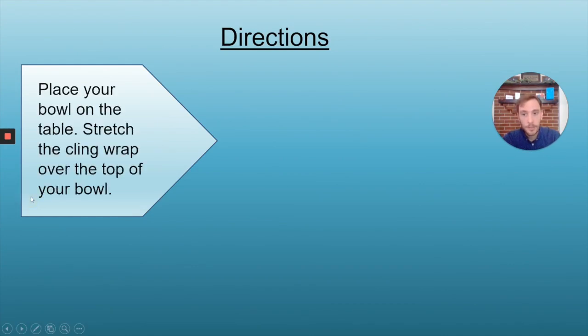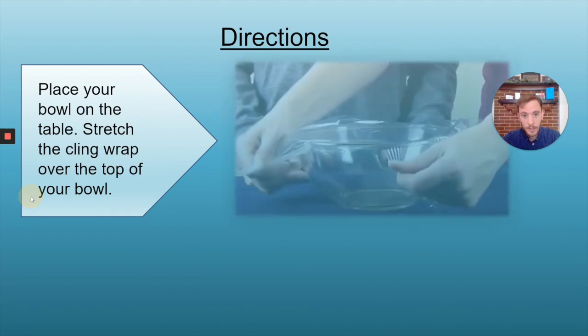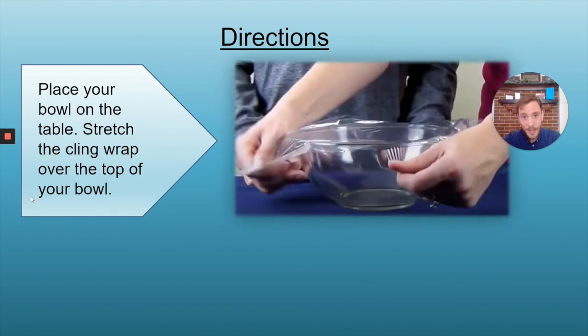The first thing that you'll want to do is to place your bowl on a solid surface like a table. Next, stretch your cling wrap over the top of the bowl. It's really important that you pull your cling wrap tightly over the top of your bowl, but don't pull so hard that you will tear the cling wrap because that will ruin your investigation.